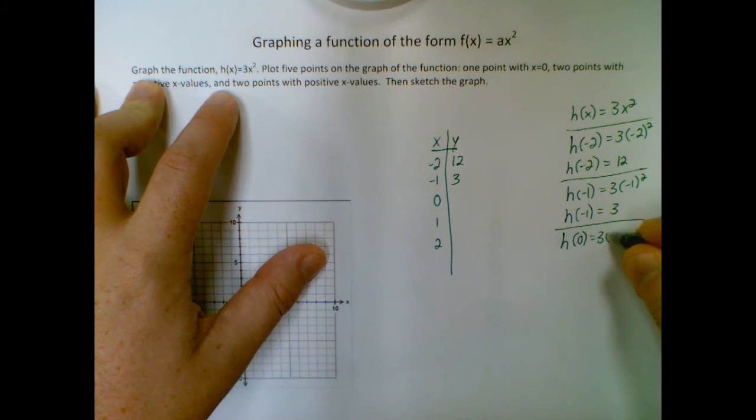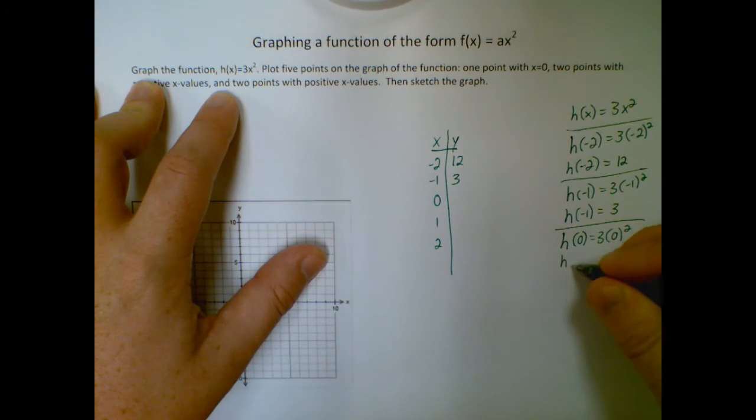Plugging in zero, my favorite number to plug in because that just drops out. Zero squared, zero times three is zero. So it gets rid of a lot of stuff for you.